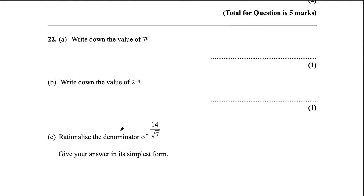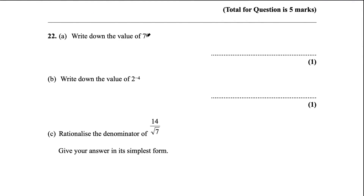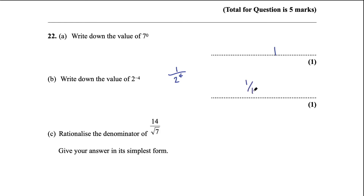Question 22a: write down the value of 7 to the power of 0. Anything to the power of 0 is 1, so the answer is 1. Part b says write down the value of 2 to the negative 4. Whenever you have a negative exponent that's like saying 1 over that thing, so 1 over 2 to the power 4. 2 to the power of 4 is 16, so this is 1 over 16.